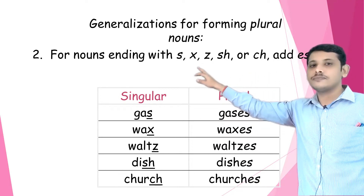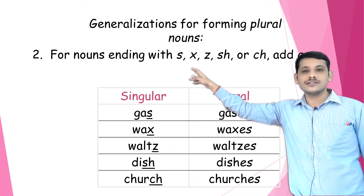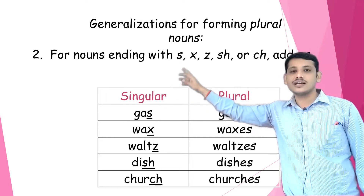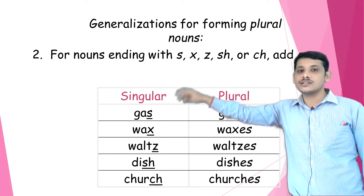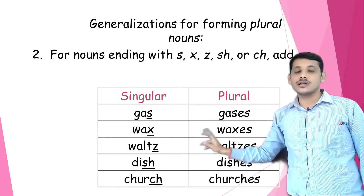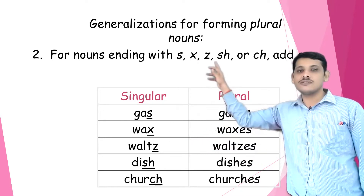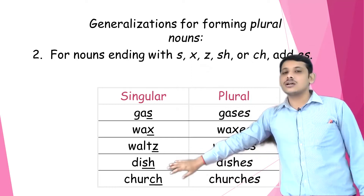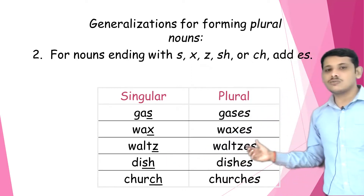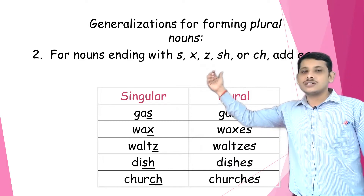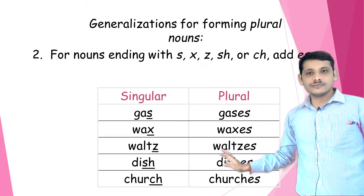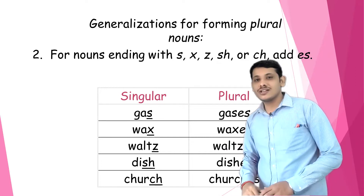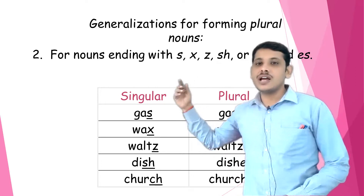Let's start with 's': gas → gases. If the word is ending with 'x': wax → waxes, box → boxes. The same applies for words ending with 'z': waltz → waltzes. Here, 'waltz' is a kind of dance form. Then we have 'sh': dish → dishes. And for 'ch': church → churches. There are many nouns which end with these letters where we have to add '-es'.